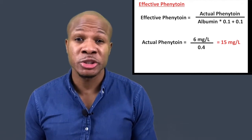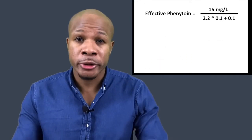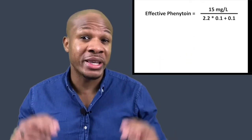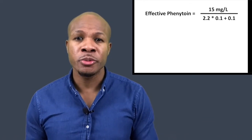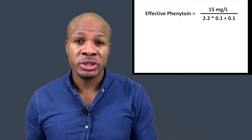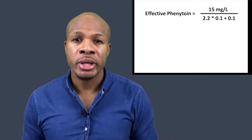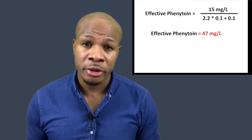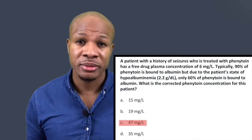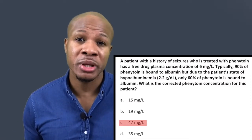Now we plug 15 milligrams per liter into our empirical equation: 15 divided by (2.2 times 0.1 plus 0.1). Plugging that into the calculator gives us 46.88 milligrams per liter — that is the effective concentration of phenytoin in the patient's body. The answer is answer choice C: 47 milligrams per liter.